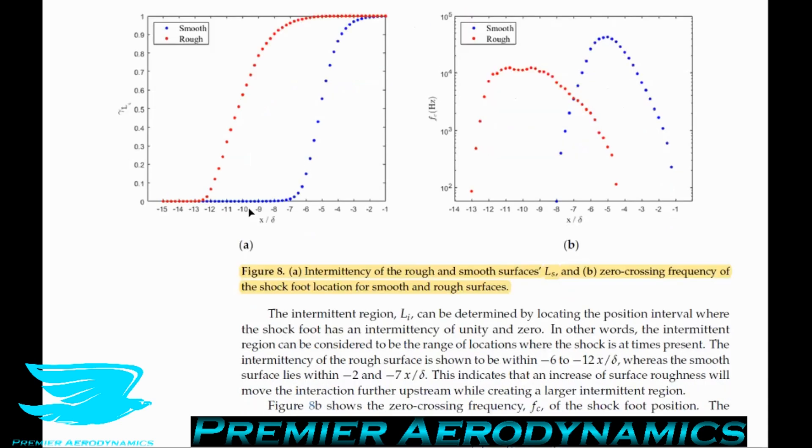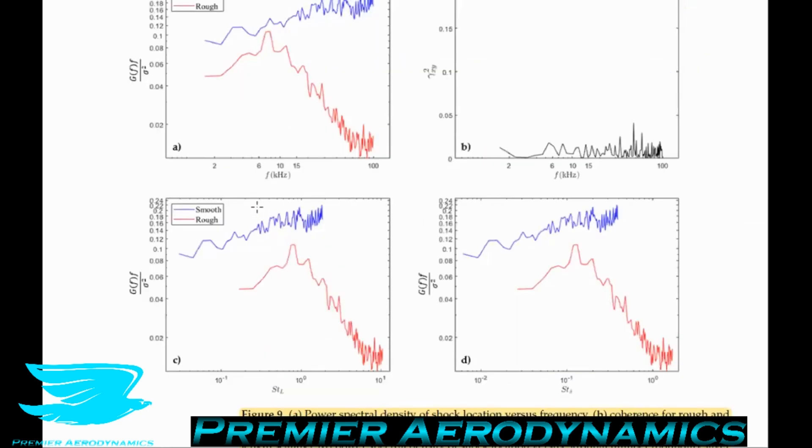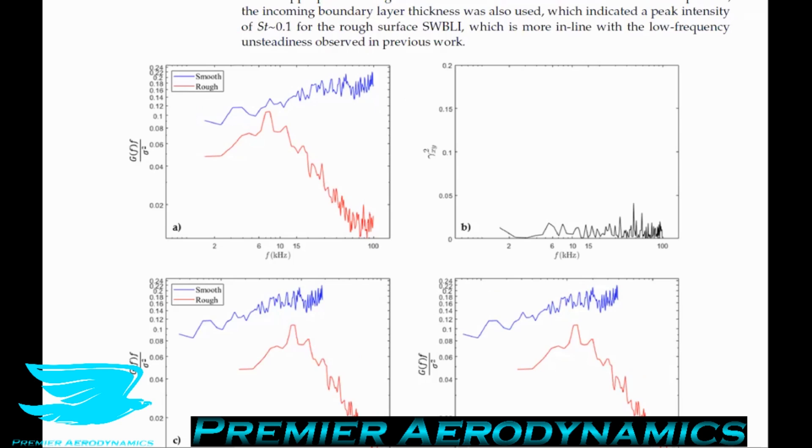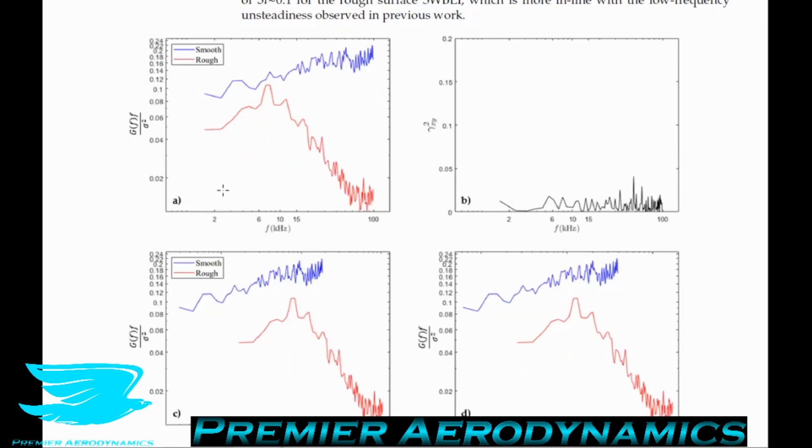Figure 9 shows the one-sided autospectral density functions that were calculated for both shock foot locations. The spectral signature of the shock motion is shown in figure 9a. Upon inspection, the spectral energy of the signals is noticeably different, and the coherence in figure 9b confirms that the signals do not possess similar spectral signatures. So there's a very low coherence here between the two different signals. The rough shock foot data possesses a peak spectral energy between 6 and 10 kHz, with a steadily decreasing energy signature for high frequencies.